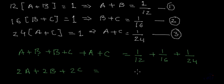And here if we take LCM, the LCM for 12, 16 and 24 will be 48. 12, 4 is 48. 4 multiplied by 1 is 4. 16, 3 is 48. 3 multiplied by 1 is 3. 24, 2 is 48. And 2 multiplied by 1 is 2.